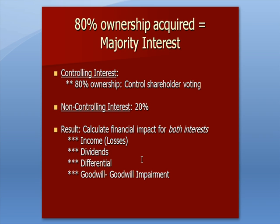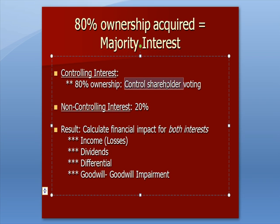In this example, we're going to have an 80% ownership interest acquired by the parent, which we refer to as a majority interest — specifically, a controlling interest of 80% ownership, meaning 80% of the shareholder voting is controlled by the parent. The non-controlling interest holds the remaining 20%. What's new in this video is that we'll start calculating the financial impact of both the majority and minority interest, looking at income or losses, dividends, the differential calculation, and goodwill — including an example of goodwill impairment.